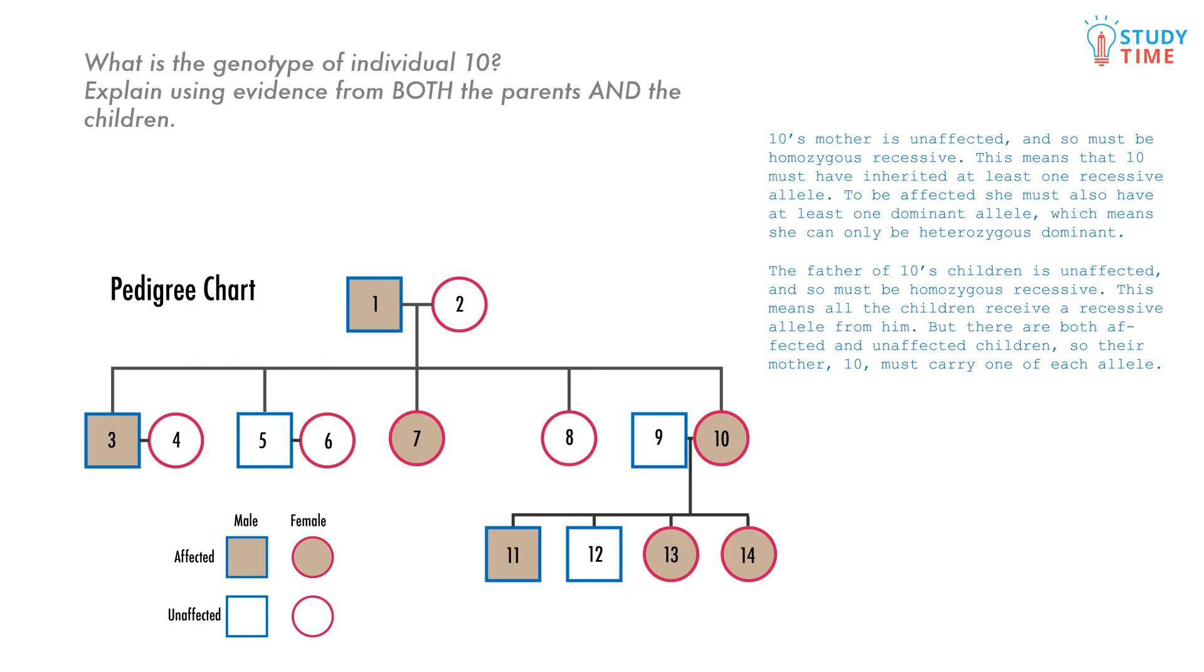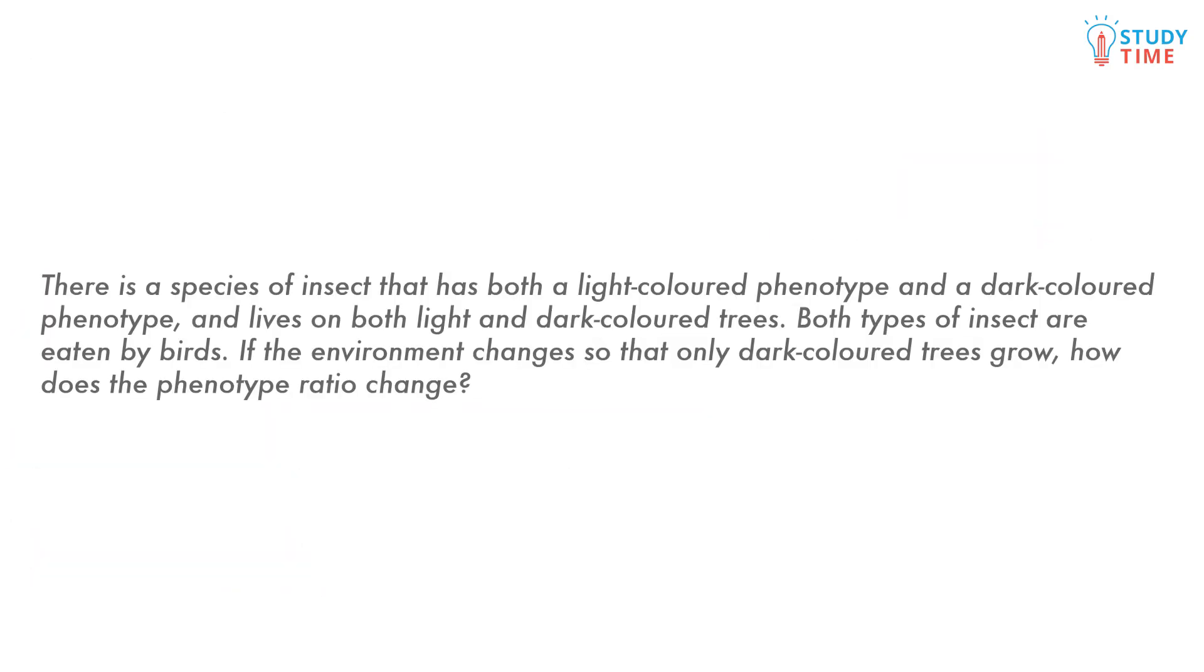Let's now look at a question that requires a wordier answer. There is a species of insect that has both a light coloured phenotype and a dark coloured phenotype, and lives on both light and dark coloured trees. Both types of insects are eaten by birds. If the environment changes so that only dark coloured trees grow, how does the phenotype ratio change?